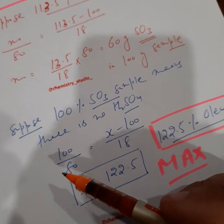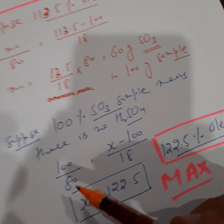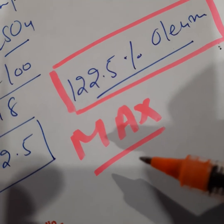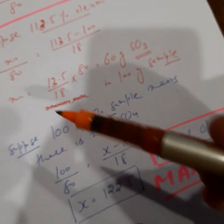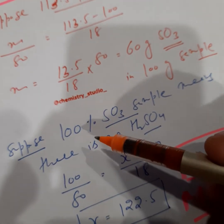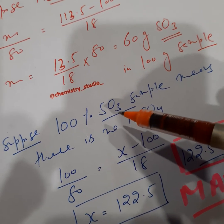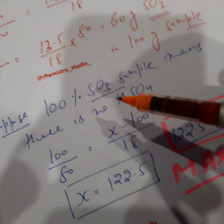Now a simple question comes to mind: then what can be the maximum percentage of oleum which can be expressed by this method? Now suppose the sample is 100% SO3, means there is no sulfuric acid at all. It contains only SO3.